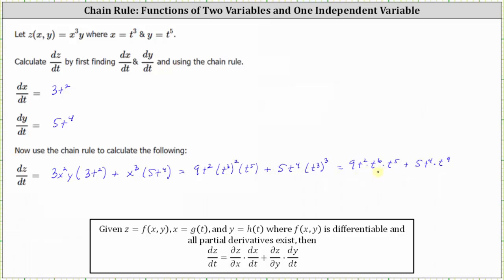And now when multiplying, if the basis is the same, we add the exponents. So we have nine t to the power of two, plus six, plus five, which is 13, and then plus five, times t to the power of four plus nine is 13.